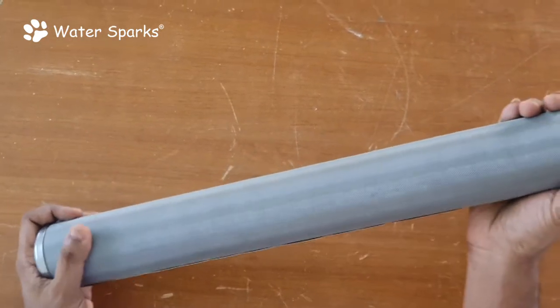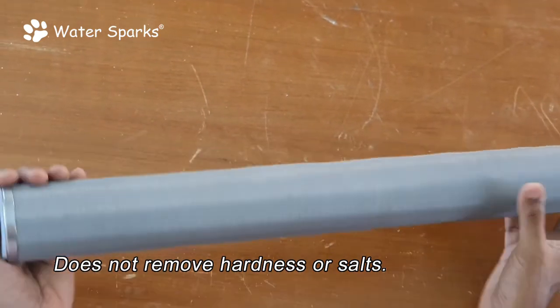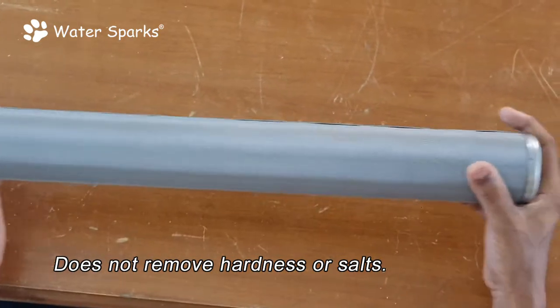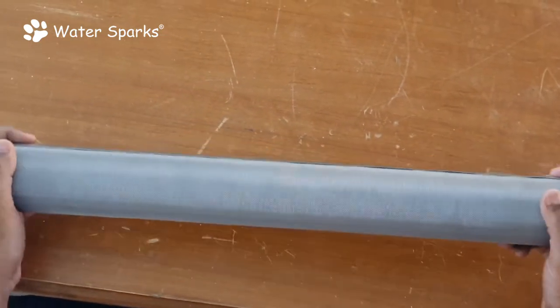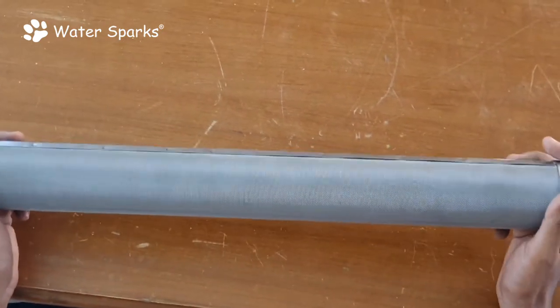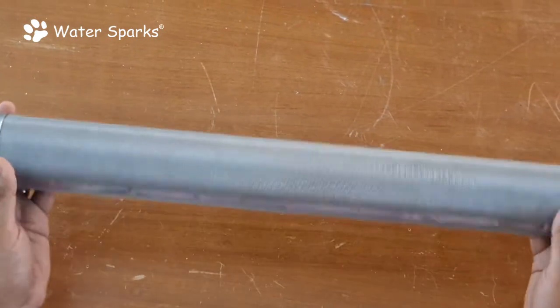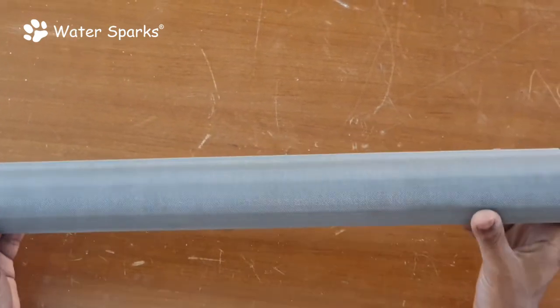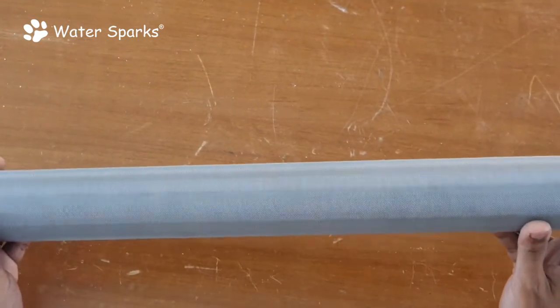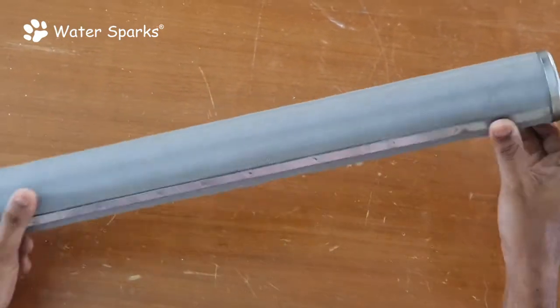With traditional cartridge filters, you need to change them very often depending upon impurities in the water. With this, you can just remove the filter once in a while, maybe monthly or twice monthly, wash it in running water, and use it for years together. You don't require a cartridge change at all, which provides very good savings.